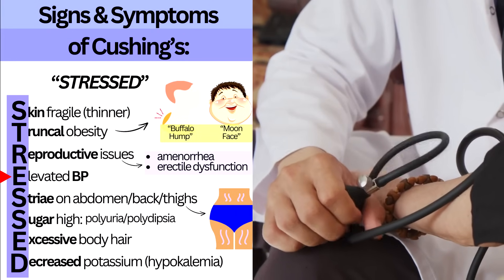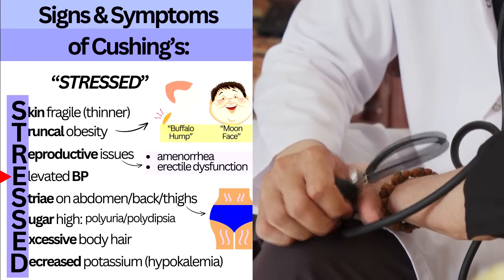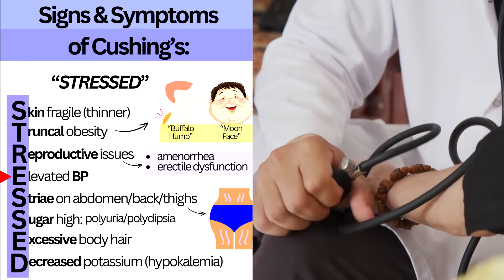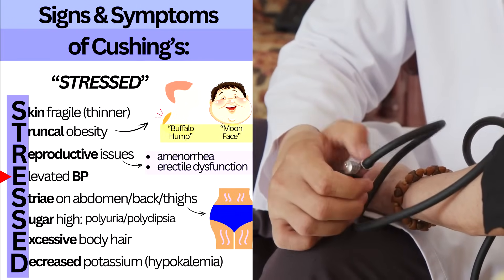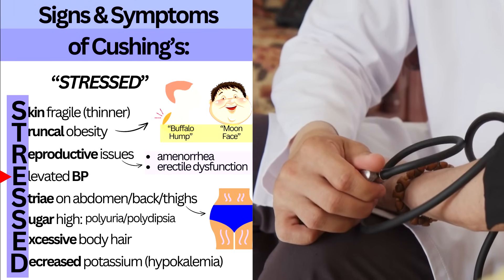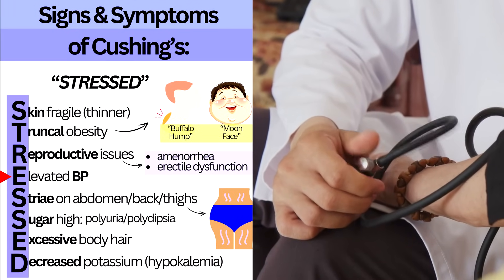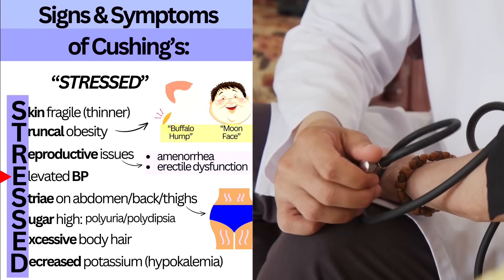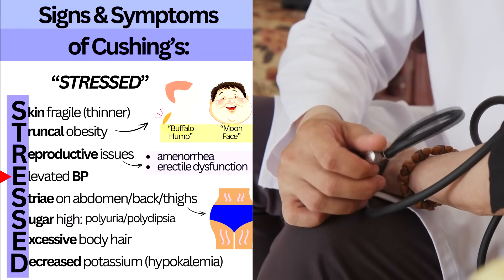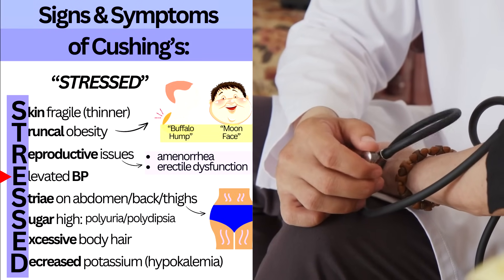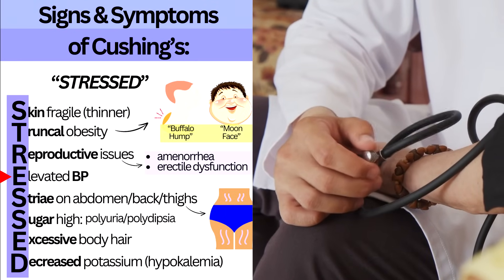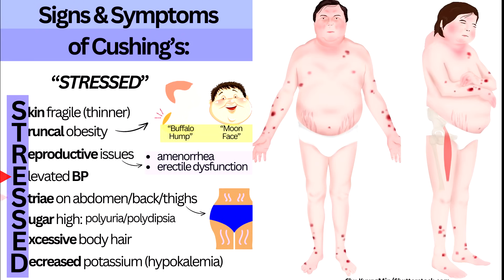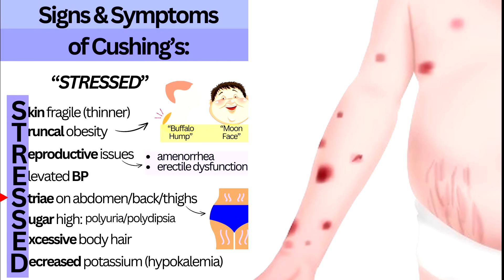E is for Elevated blood pressure: cortisol mimics the actions of aldosterone, causing the kidneys to retain sodium and water, resulting in hypernatremia. On the flip side, the kidneys waste potassium, so the patient can experience hypokalemia. The sodium and water retention increases blood volume, which increases blood pressure.